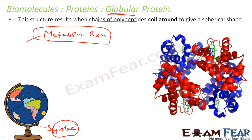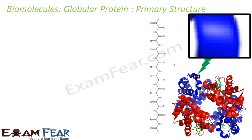Proteins are very complex to understand, so chemists broke them into small parts. They divided protein structure into four levels: primary, secondary, tertiary, and quaternary. For primary structure, if you zoom into the protein, you'll see a sequence of amino acids — this sequence is nothing but the primary structure. Primary structure is simply the sequence of amino acids.